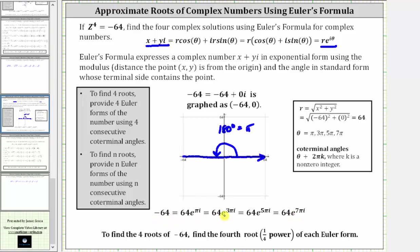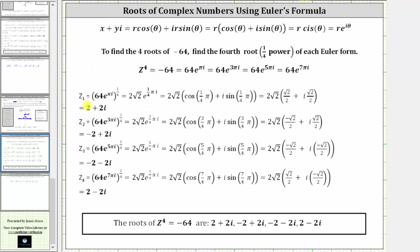From here, because we are trying to find four complex solutions or four complex roots, we now need to take the fourth root or the one-fourth power of each of these exponential forms or Euler forms. We will call the four roots Z sub one through Z sub four, and for each root, we have taken the exponential form for negative 64 and raised it to the one-fourth power.